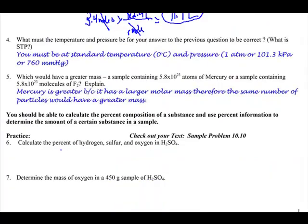Number four says what must the temperature and pressure be for your answer in the previous question to be correct? It has to be at standard temperature, 0 degrees Celsius, which later when we do gases has to be converted to Kelvin. And standard pressure, which is 1 atm, 101.3 kilopascals, 760 millimeters of mercury. We even talked about 14.7 pounds per square inch.